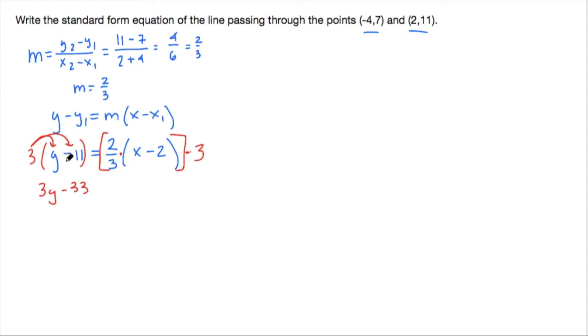So this 3 will just cancel with the 3 there in the denominator. So now our expression is 2 times the quantity x minus 2. Nothing to do on the left-hand side, I'm going to carry that along with us. On the right-hand side, let's go ahead and distribute, so we get 2x minus 4.